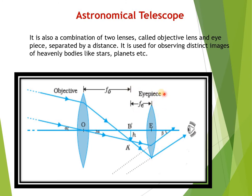For the objective lens, the image is formed at the focus, which acts as an object for the eyepiece lens through which we see the image. In case of normal adjustment, when the final image forms at infinity, the image from the objective is adjusted to fall exactly at the focus of the eyepiece so that the final image forms at infinity. The working principle is the same: the first lens produces the image and it is magnified by the second lens.